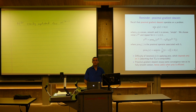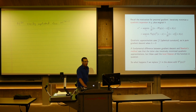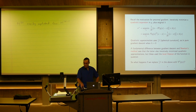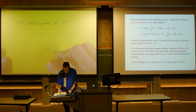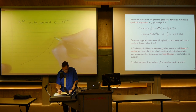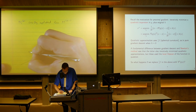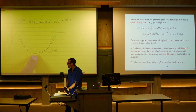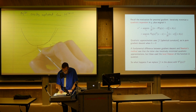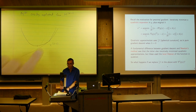Any questions about proximal gradient before we move on? The motivation actually came from gradient descent — we can view gradient descent in terms of taking local quadratic approximations. Suppose we're at some point X K minus 1. The idea behind gradient descent is to take a local quadratic approximation to our function, minimize this local quadratic approximation to get the next point X K, then make another quadratic approximation, and so on. What was special about this quadratic approximation is that its curvature was dictated by 1 over t times the identity matrix.